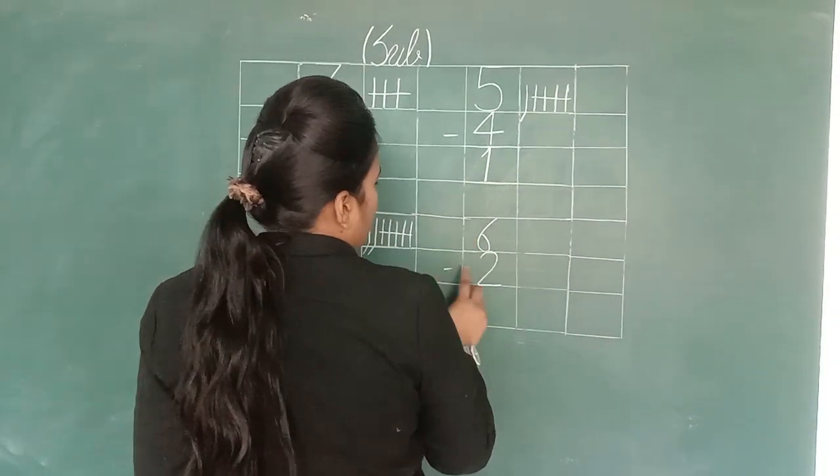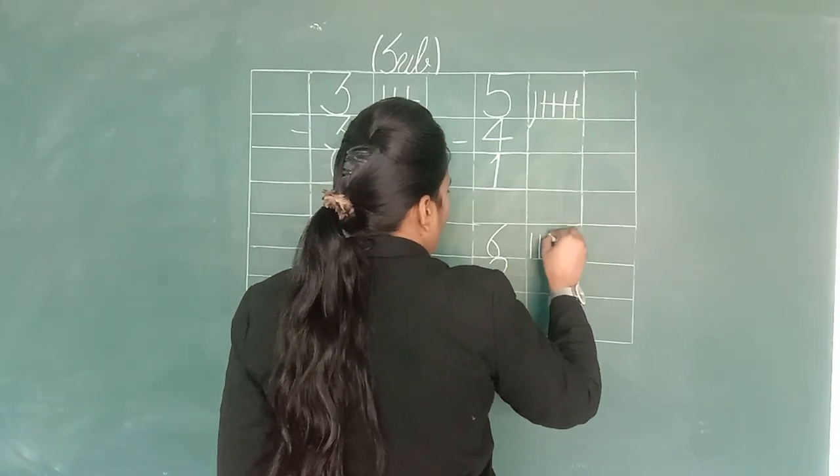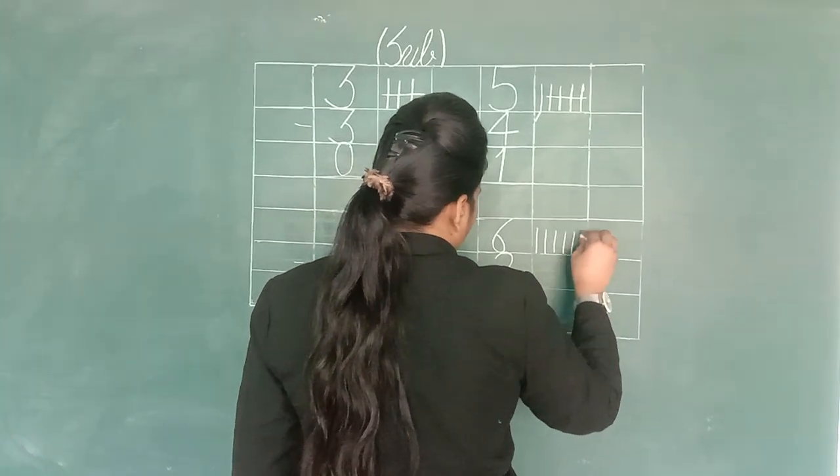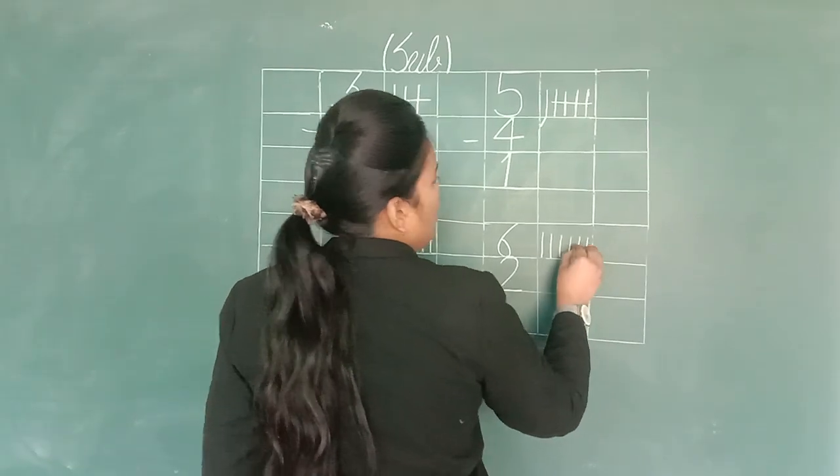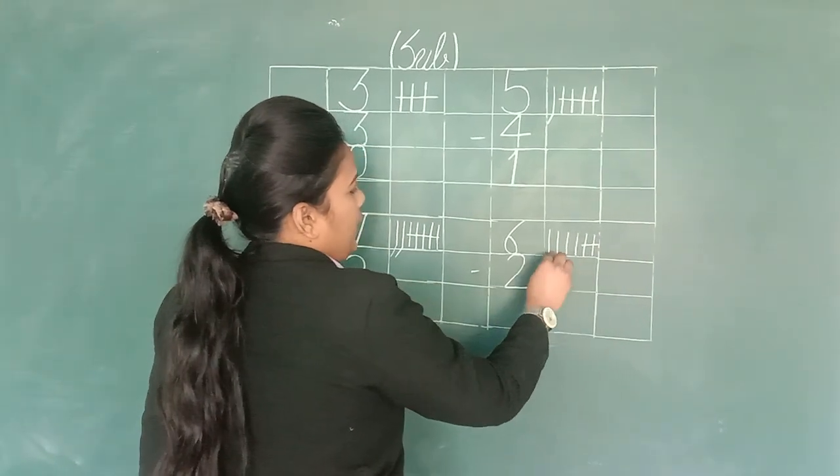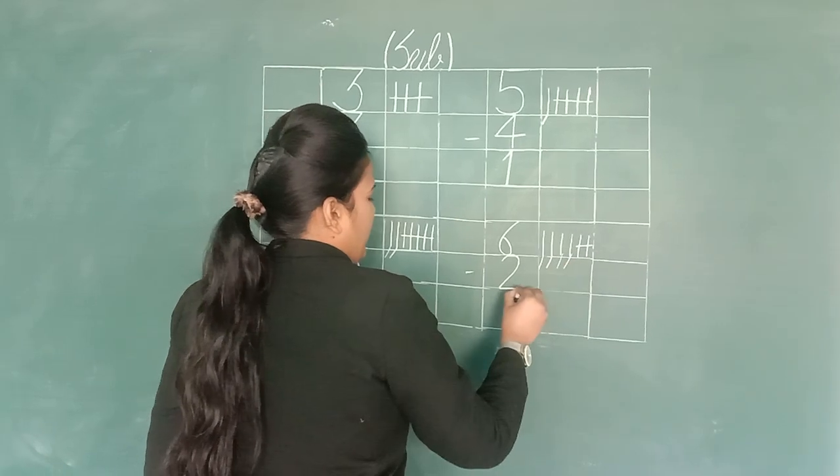Next sum, 6 minus 2. Draw lines for 6: 1, 2, 3, 4, 5, 6. Cut 2. We have cut 2, so left is 1, 2, 3, 4. Write down 4.